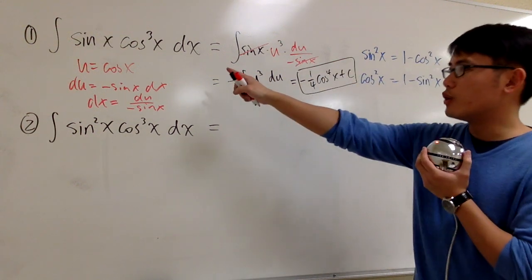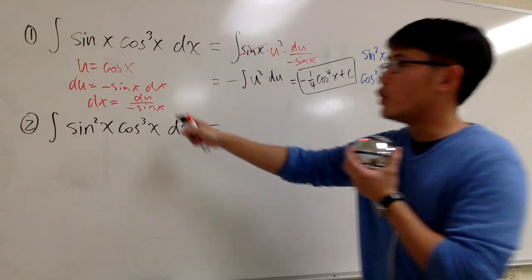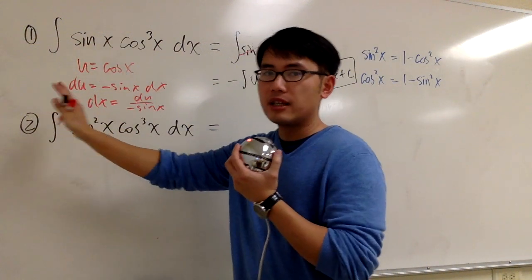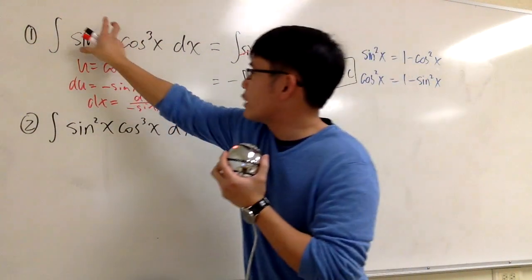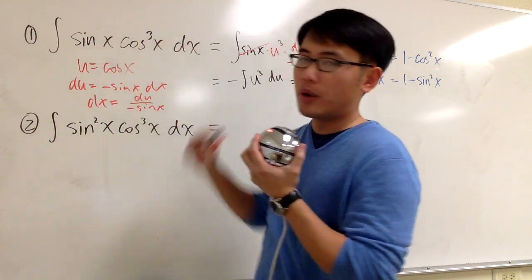And now let's take a look, how come that question is so easy? It's because we have a sine x outside, and we can cancel it out, outside right here, compared to cosine to the third power.